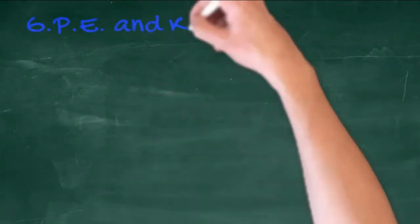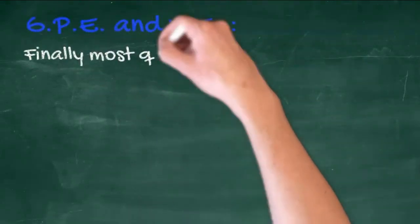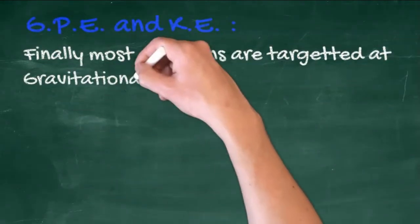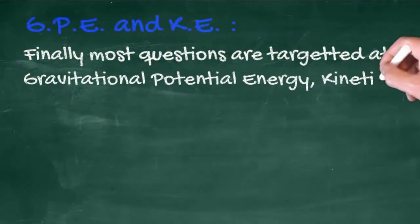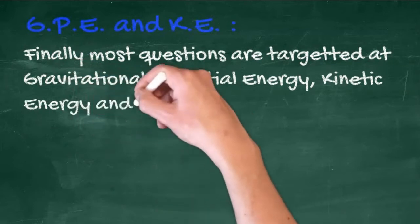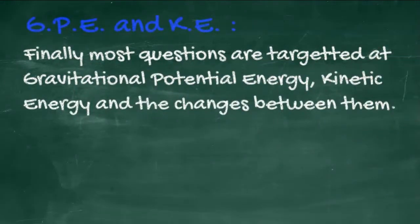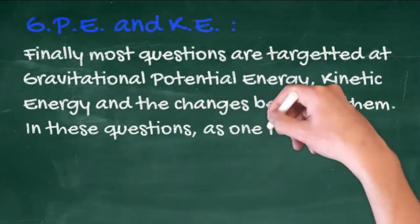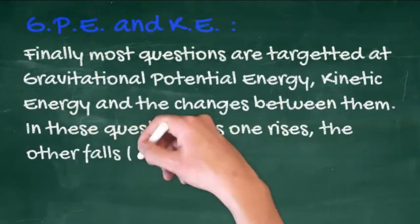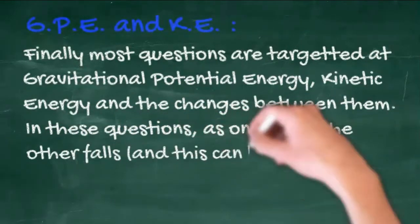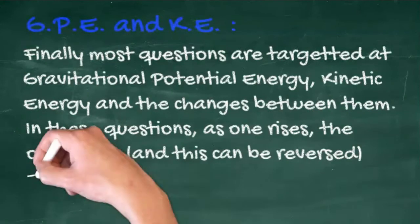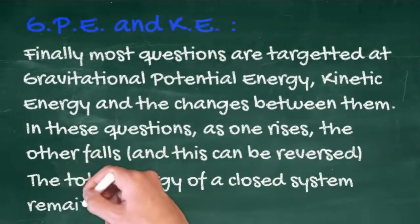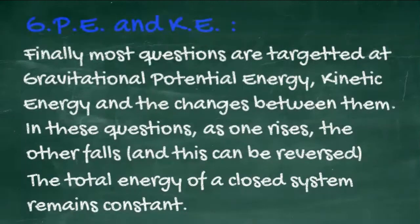Gravitational potential energy and kinetic energy. Most questions are targeted at gravitational potential energy, kinetic energy and the changes between them. In these questions, as one rises the other falls, and this can be reversed. The total energy of a closed system remains constant.